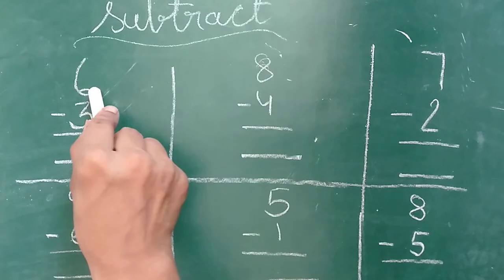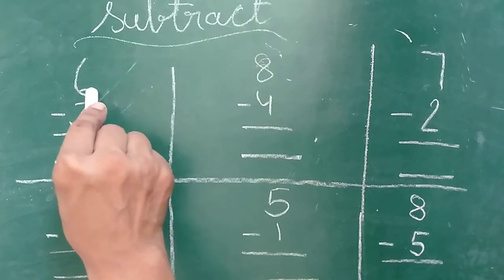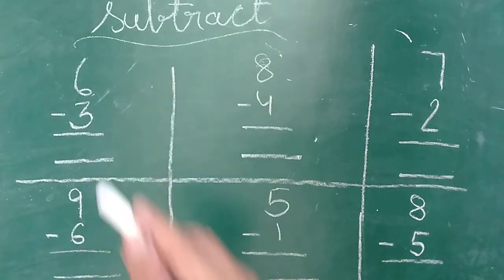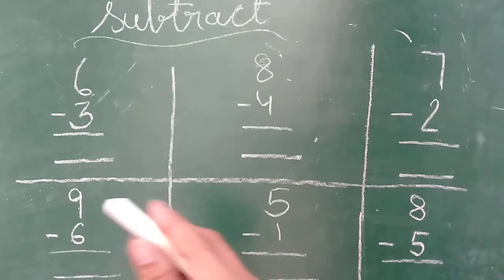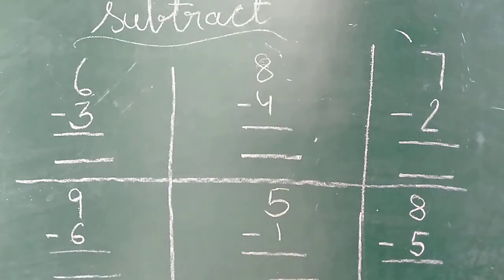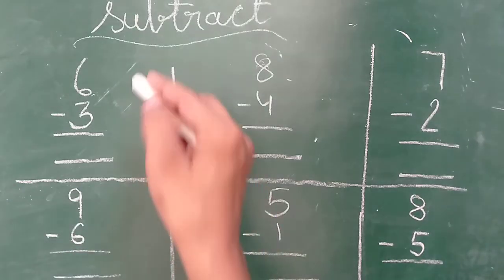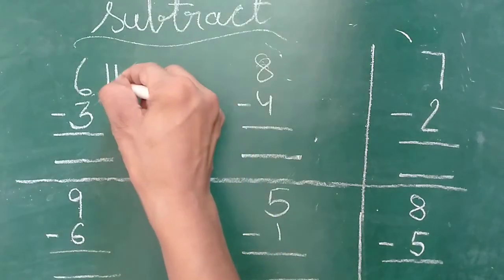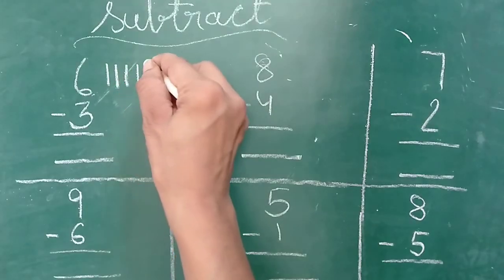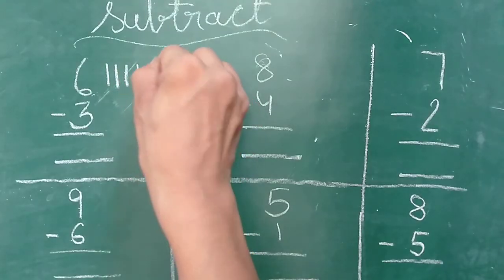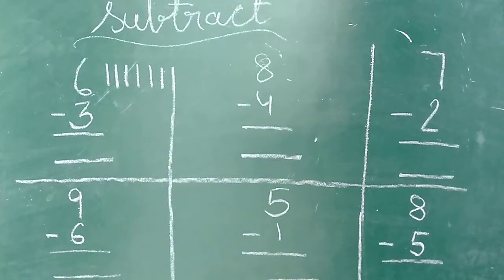Kitna number hai ye? Six. Toh kya karenge? Six lines draw karenge. Thik hai? One, two, three, four, five, six. Kitni lines draw ki? Six lines draw ki.